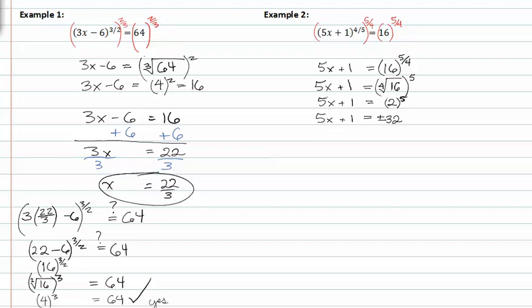Now subtract 1 from both sides and divide by 5. We have 5x = -1 ± 32, so x = (-1 ± 32)/5. Since there are no radicals in the numerator, I'll find the two exact values for x.